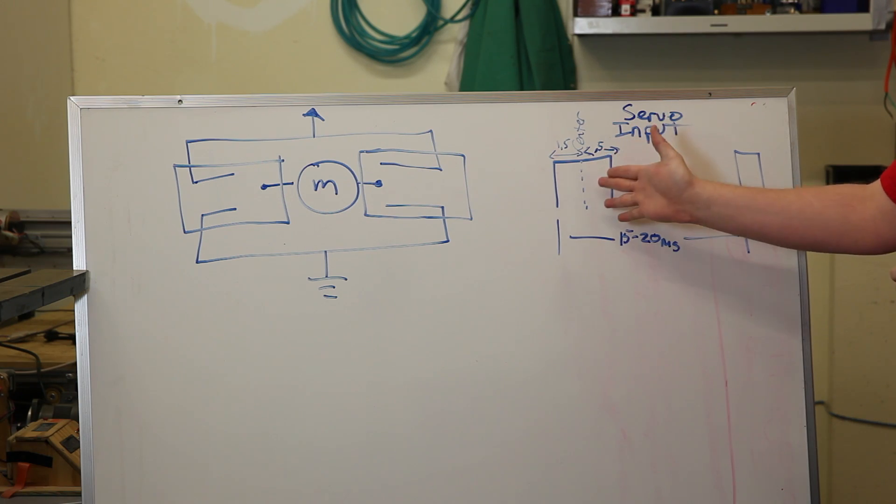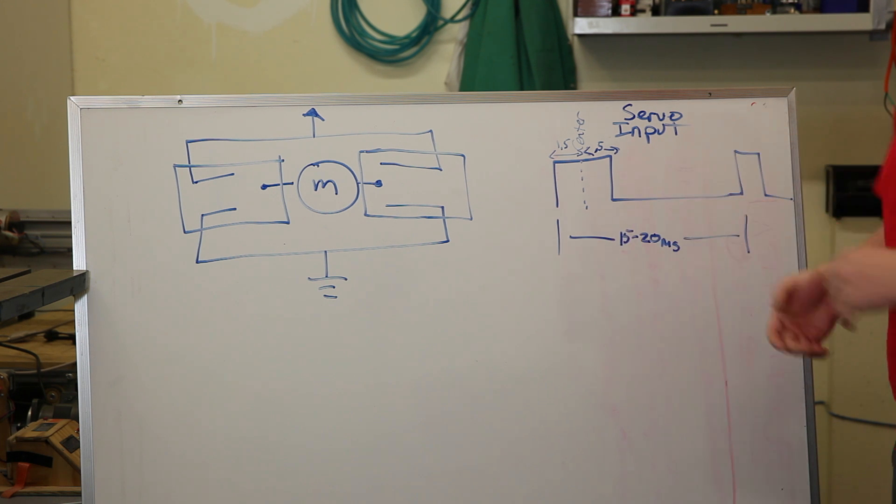If you take half a millisecond back or forward, that's usually negative 90 or plus 90. There's a 20 millisecond break between each pulse, so most servos have an update rate of about 50 hertz.